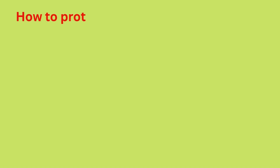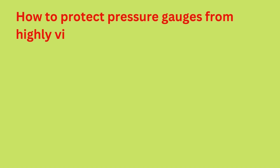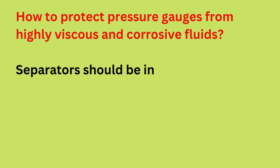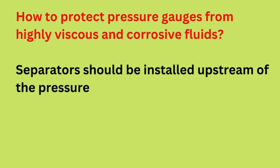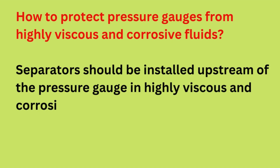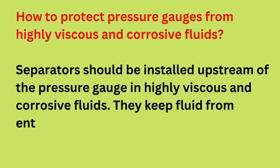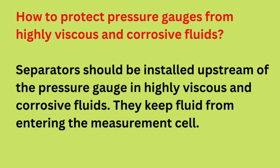How do you protect a pressure gauge from highly viscous and corrosive fluids? Separators should be installed upstream of the pressure gauge when dealing with highly viscous and corrosive fluids. They keep fluid from entering the measurement cell.